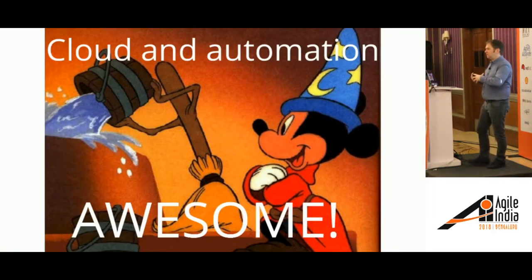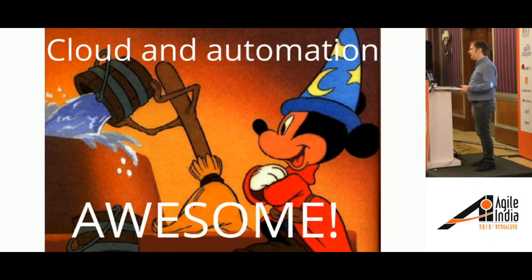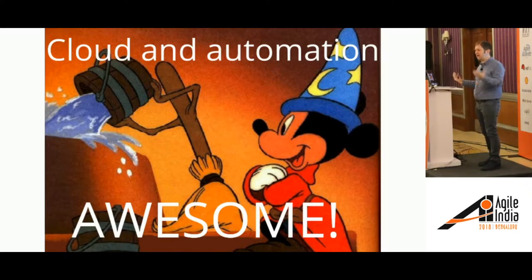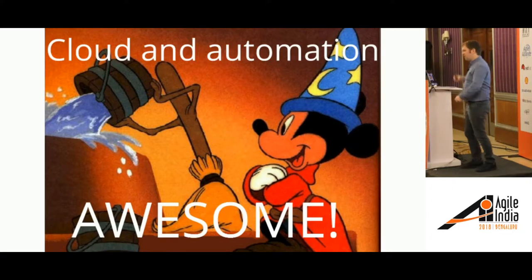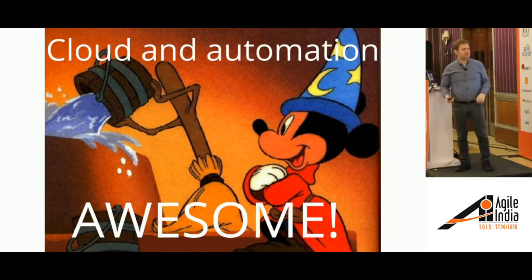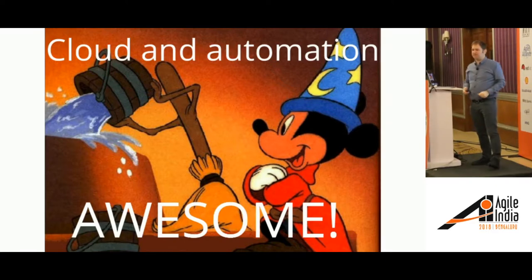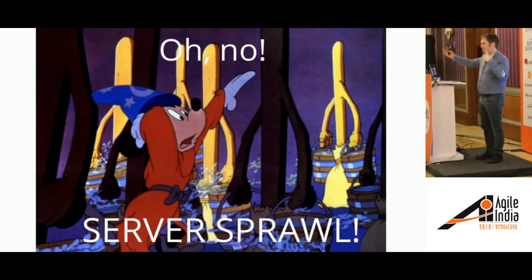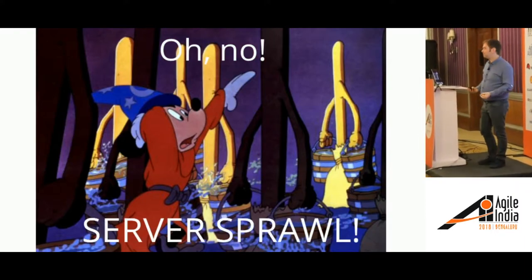When I first discovered virtualization, I used to work with physical servers. When somebody needed a server, I had to buy hardware, assemble it, and take it to the data center. Then I discovered VMware, and suddenly I could create a VM like that — the snap of a finger. That felt really awesome, like Mickey Mouse and the Sorcerer's Apprentice. But what happened to Mickey is the same thing that happened to me. I ended up with loads and loads of virtual machines out of control — all different versions of things, and I couldn't keep them all patched and up to date.